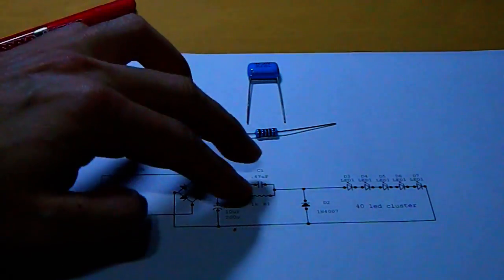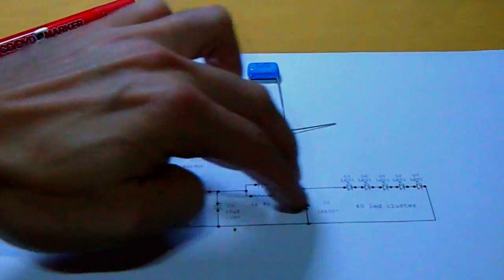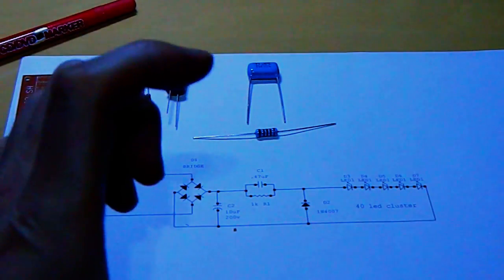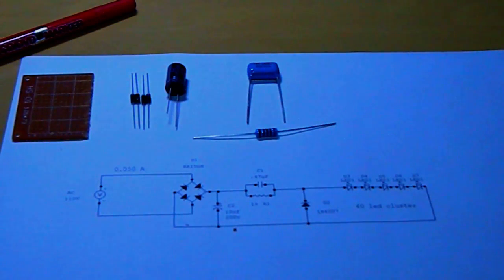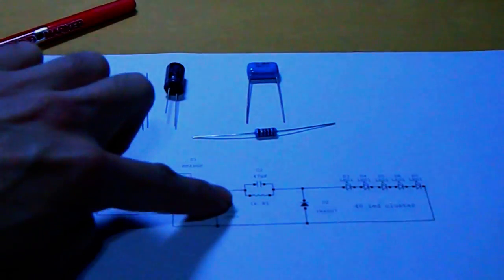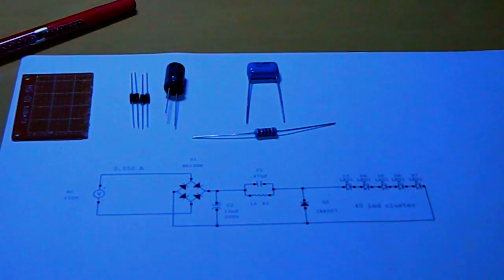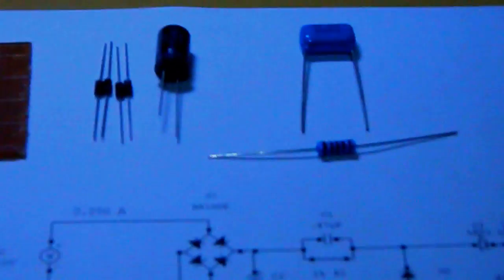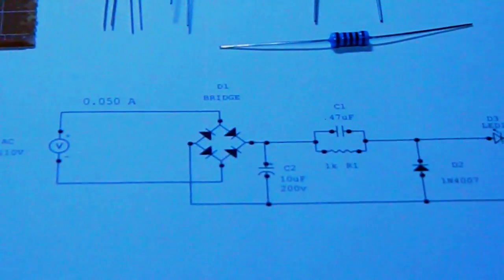And basically is this. This other part is on the LED cluster. I will have to make a few of them. Then I will try to show this step by step. But basically this is the circuit. There is nothing special. It is a very simple circuit and very easy to create.